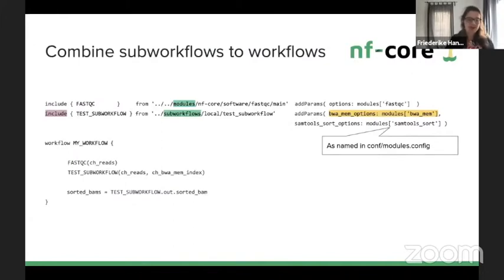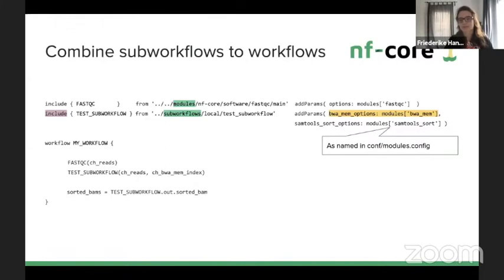To combine subworkflows into workflows, the header contains include statements for the workflows/subworkflows and FastQC. One is from modules/NF-core/software and one from subworkflows/local. You pass parameters down — highlighted in yellow — and for the FastQC module you just specify the FastQC parameter in modules brackets. For the subworkflow, you specify all tool options inside it, so here BWA and SAMtools sort, which correspond to the fields originally specified in modules.config.